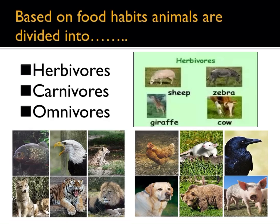Some carnivores eat only dead animals. They are known as scavengers. For example, hyena, jackal, vulture, etc.